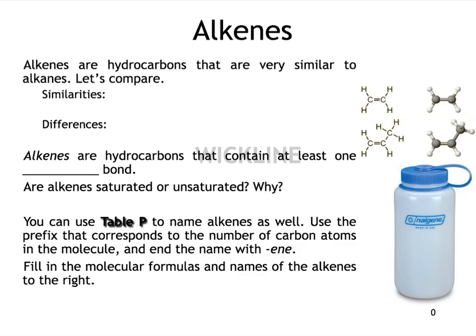So alkenes, and I'm trying to be careful with my pronunciation here, alkenes are similar to alkanes. They're sort of like cousins. Things they have in common are that they are hydrocarbons, meaning they contain only carbon and hydrogen. But a difference between them is that alkenes will contain at least one double bond, whereas alkanes contained only single bonds. Alkenes are hydrocarbons that contain at least one double bond, and that would mean that alkenes are unsaturated. You're only saturated if you have only single bonds.